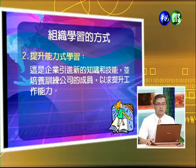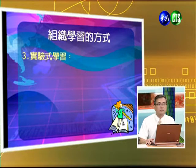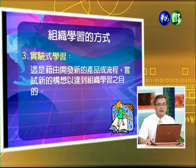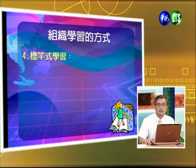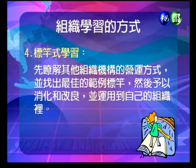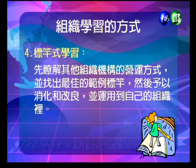組織學習的方式大概有幾個。第一個是改良式的學習，藉由規劃、執行、檢視、改良的過程，也就是PDCA的循環，來持續改良現有的作業流程，達到學習成長的目的。第二種是提升能力的學習，企業引進新的知識跟技能，並培養訓練公司成員，以要求提升工作能力。第三個是實驗室的學習，藉由新產品開發流程或流程開發等，來嘗試新的idea和構想，達到組織學習的目的。第四種是標杆式的學習，先了解其他組織機構的營運方式，找出最佳典範，把它消化跟改良後運用到自己的組織裡面。